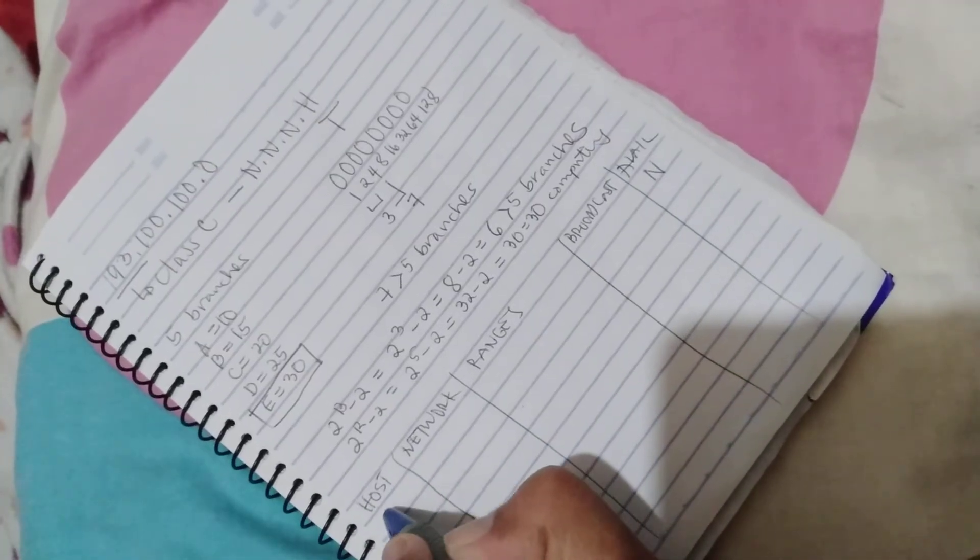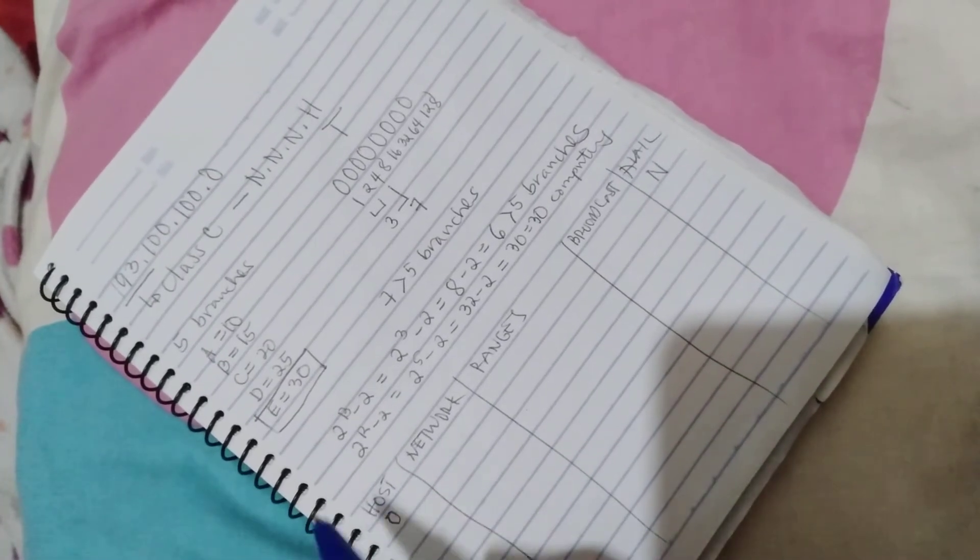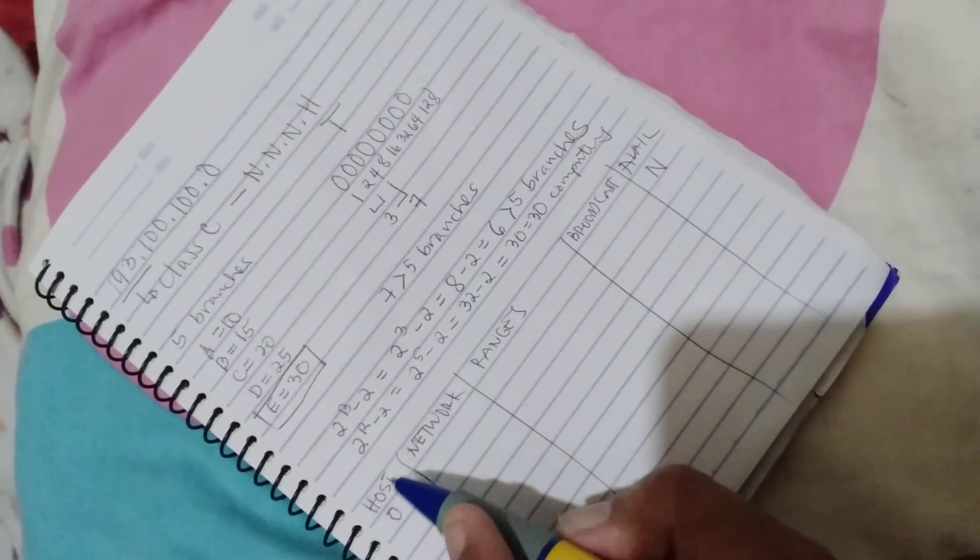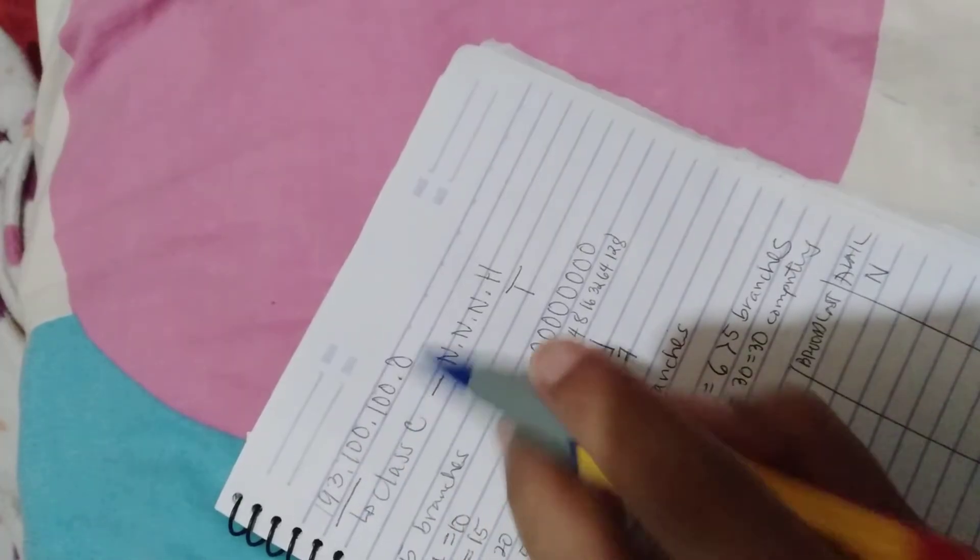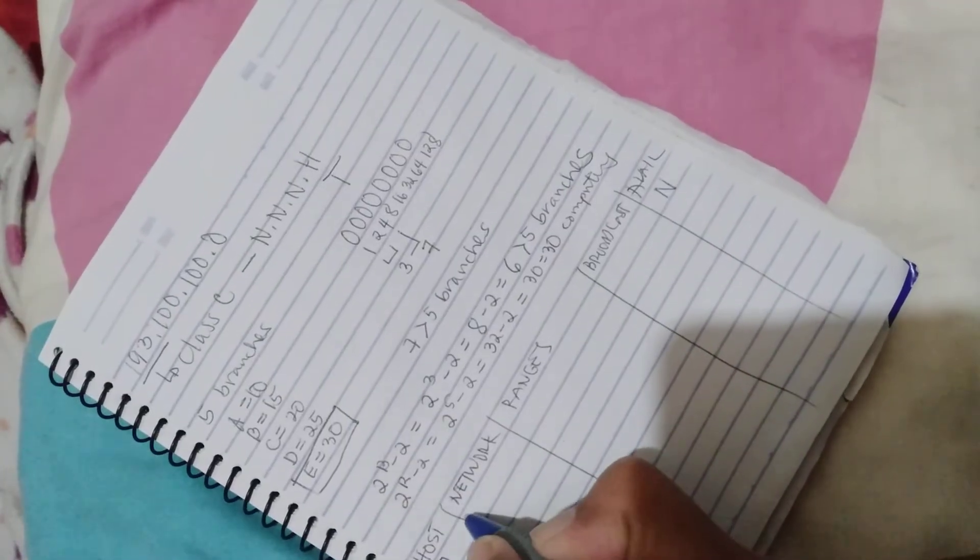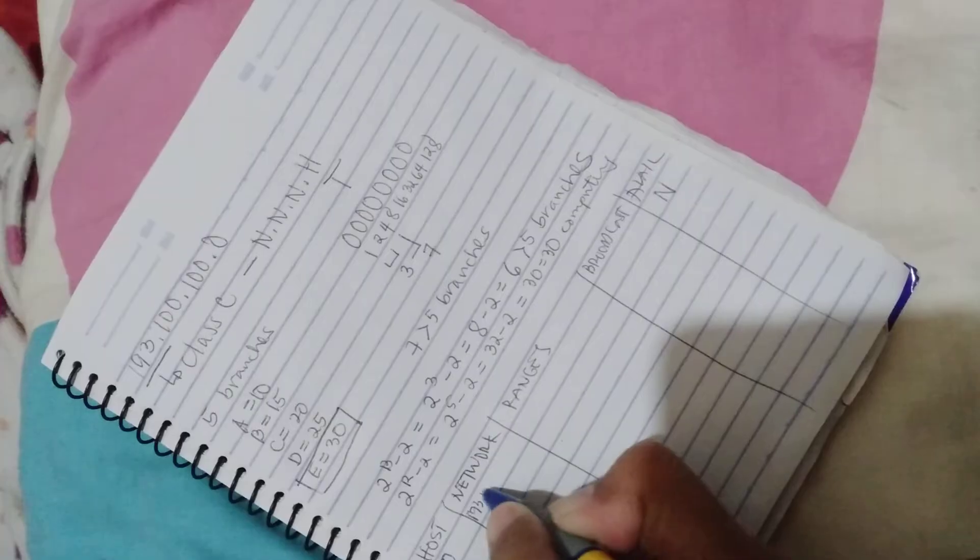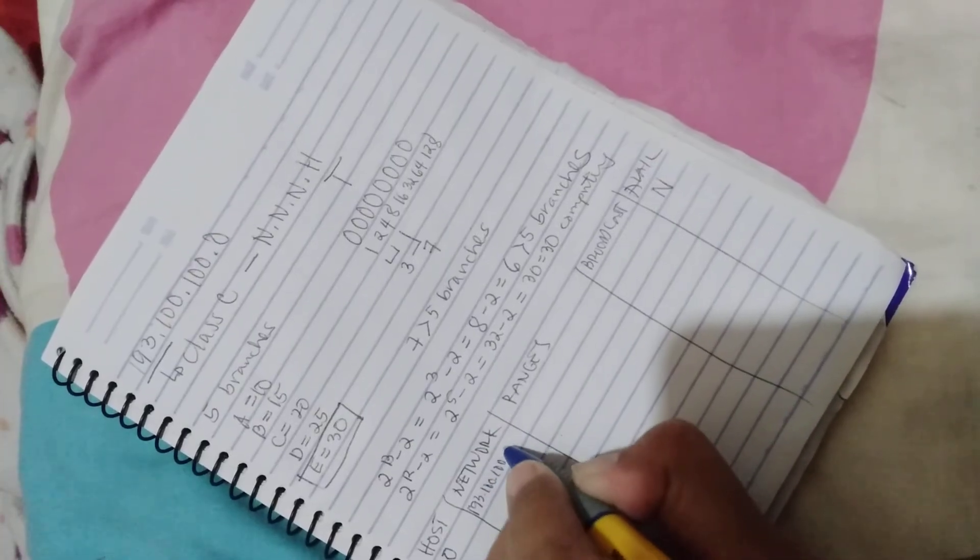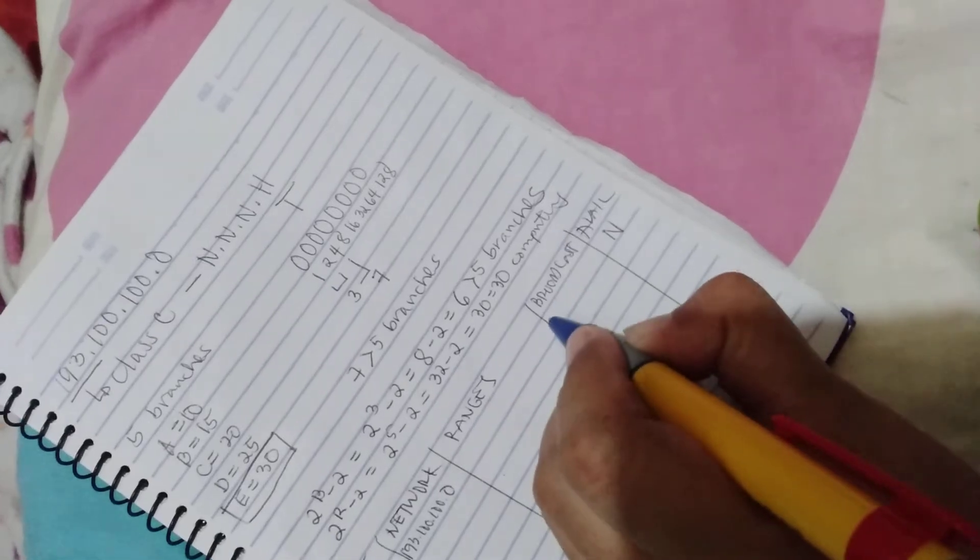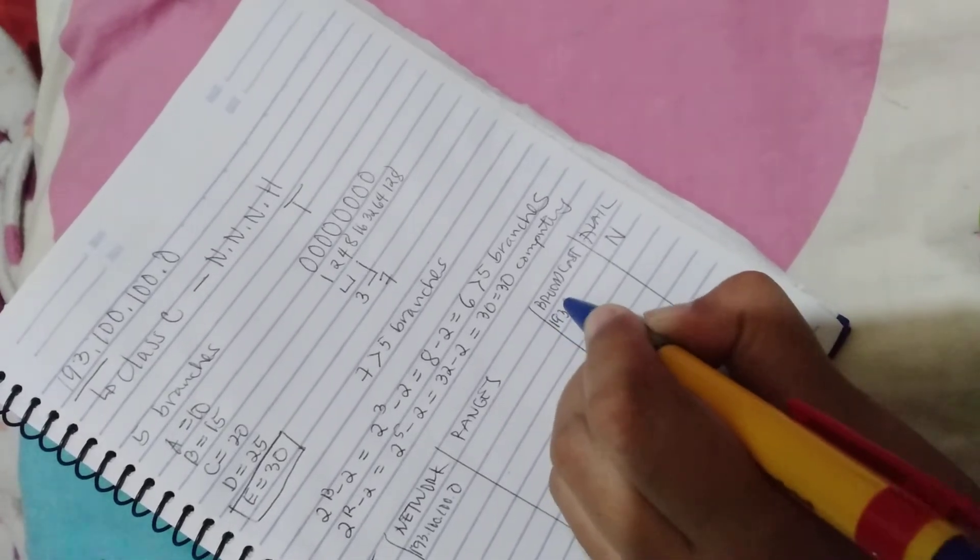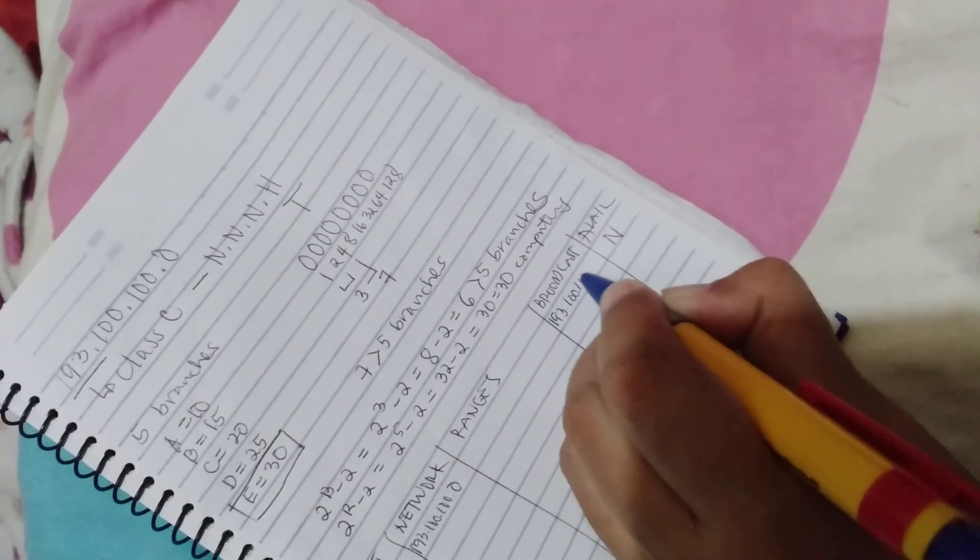We will start with host 0. First network is the IP address, which is 193.100.100.0, and the first broadcast is 193.100.100.31.